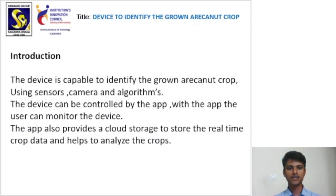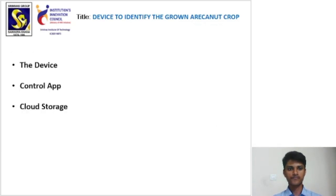The device can be controlled by the app. With the app, the user can monitor the device's activities. The app also provides cloud storage to store real-time crop data and helps to analyze the crop. The device consists of three main components: the device, the control app, and the cloud storage.